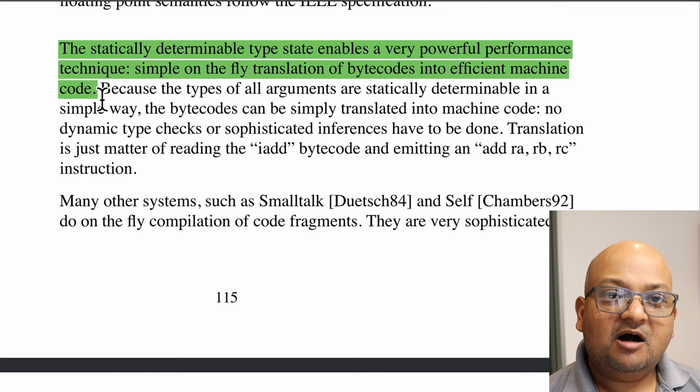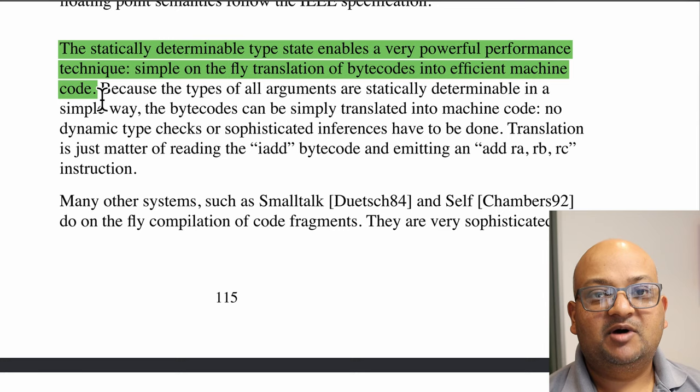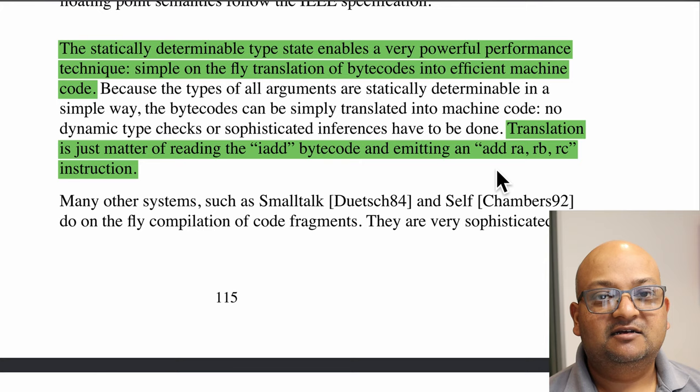There's another very powerful consequence of having verified the bytecode in this way. With all this type information, it becomes very easy to convert this bytecode into efficient native machine code for the specific machine architecture that it is running on. You don't have to do any runtime type checks because the verifier has already checked that. To take a simple example, if you have an iadd bytecode, which adds two integers from the top of the stack, you can translate that on, say, an Intel architecture to an add instruction with three registers.